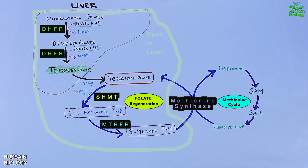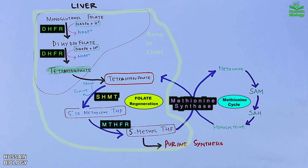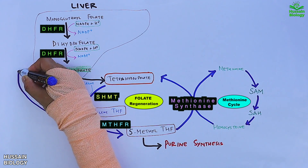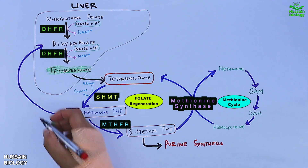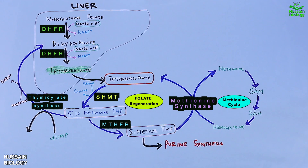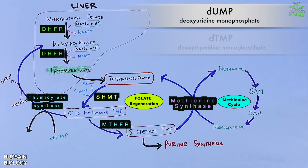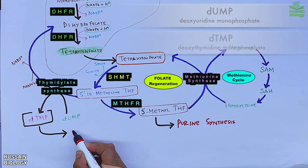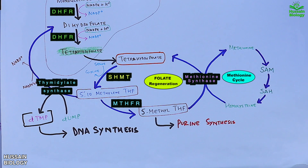5-methyl THF or 5-methyltetrahydrofolate can also lead into purine synthesis. Additionally, the THF can drive the formation of dihydrofolate when acted upon by thymidylate synthase in the presence of dUMP. This dUMP gets converted into dTMP, as shown in the diagram, and dTMP can lead into DNA synthesis.